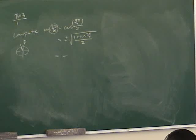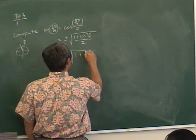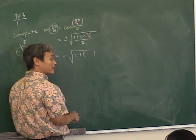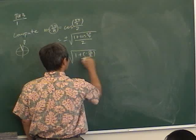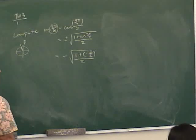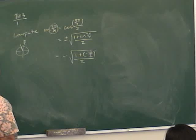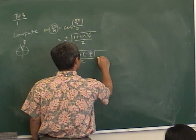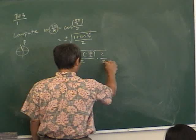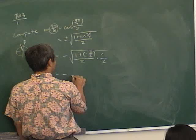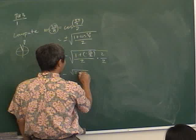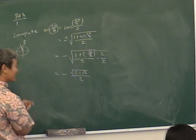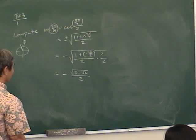So cosine(5π/8) = −√((1 + cosine(5π/4))/2). Cosine(5π/4) = −√2/2 — it's better to use 1/√2 in this case. Multiply top and bottom inside the radical by 2: get (2 − √2)/4. The square root of 4 comes out as 2, so the final answer is −√(2 − √2)/2.